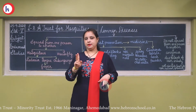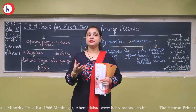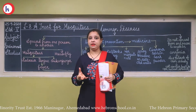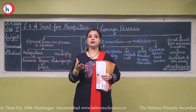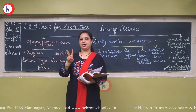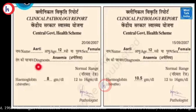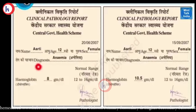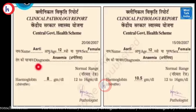Here are two blood reports. When a child is having anemia, the doctor will ask them to do a blood test. In the first report, the hemoglobin is only 8 grams. But after taking iron medicines and eating enough leafy vegetables and fruits, the person does the blood test again and the doctor asks for a follow-up blood test.